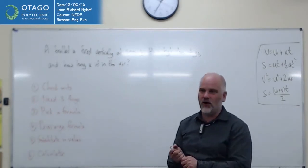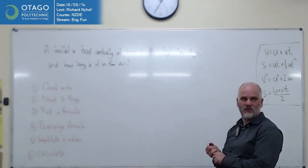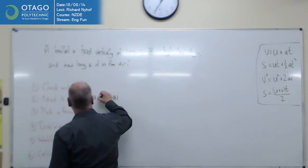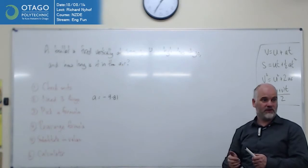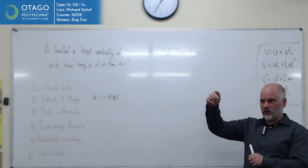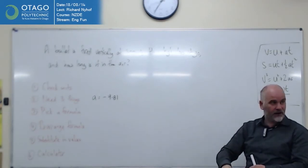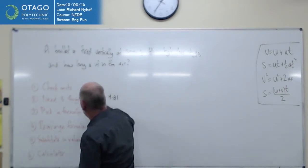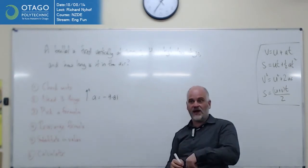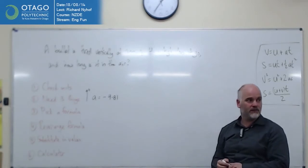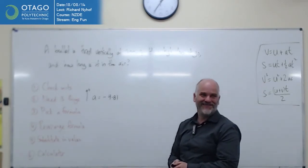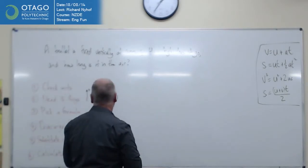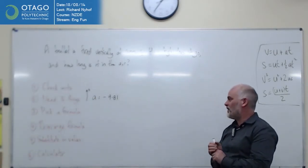Three things. What three things have I got? So what's acceleration in this case? Negative 9.81. We're going to call up positive, so acceleration is coming down. In the previous example, we called down positive. So here we have effectively called up positive. And gravity's working down, so acceleration is against that, so it's negative. So we've got acceleration is negative 9.81. That's one thing. What else have I got?